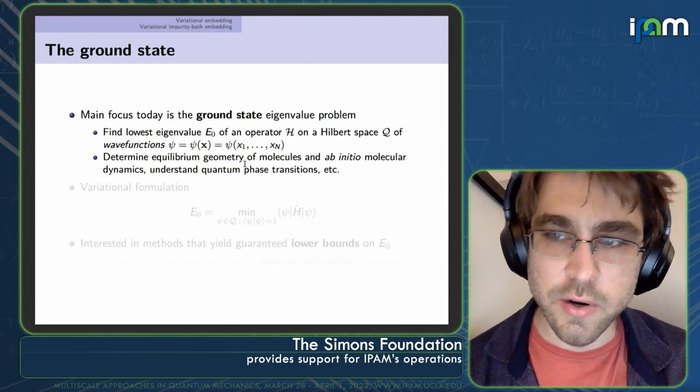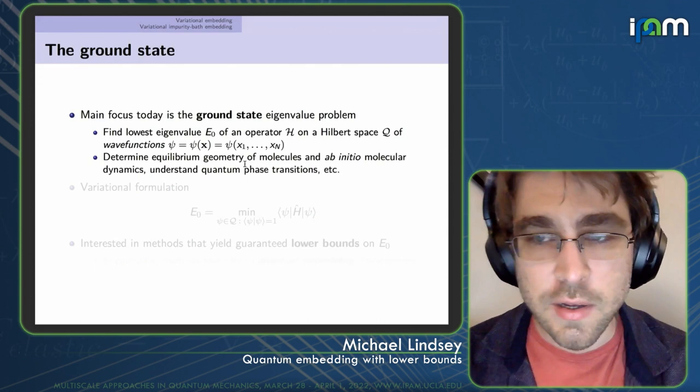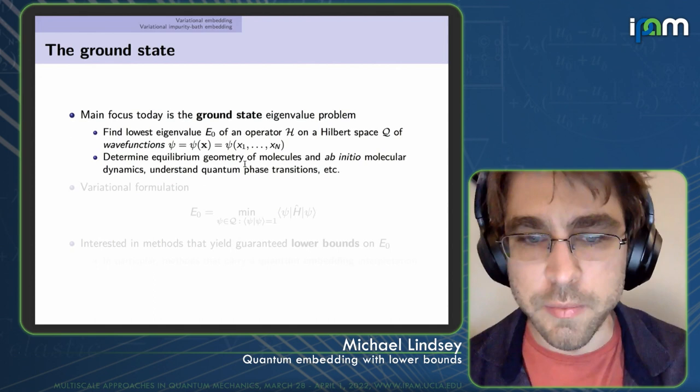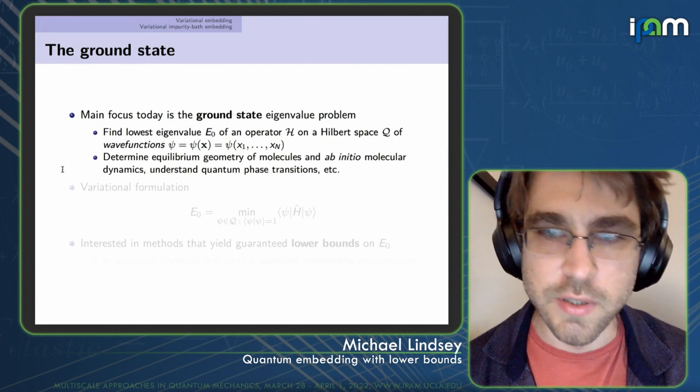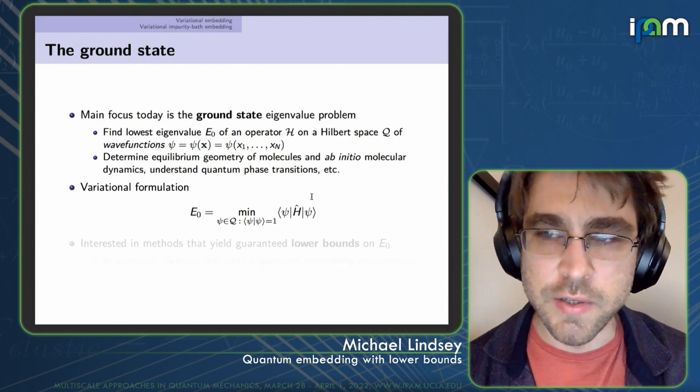Computing ground state energies allows you to do many great things: determining quantum chemistry equilibrium molecular geometries, running molecular dynamics from first principles, and in condensed matter physics, understanding quantum phase transitions, etc. We start from a variational formulation of the ground state energy as the minimal possible expected energy over all normalized wave functions.